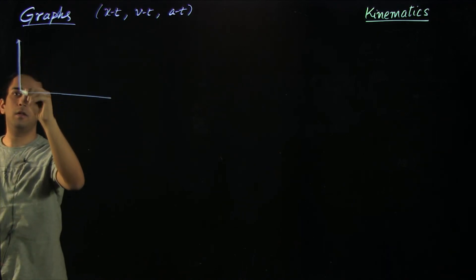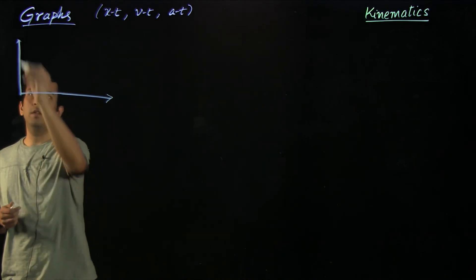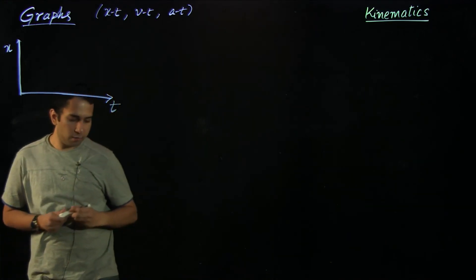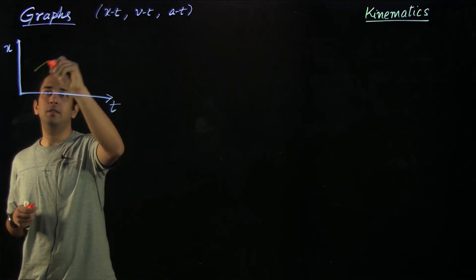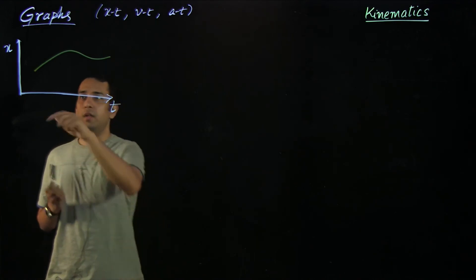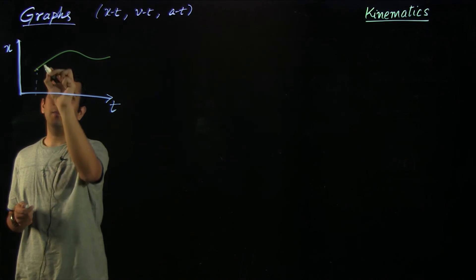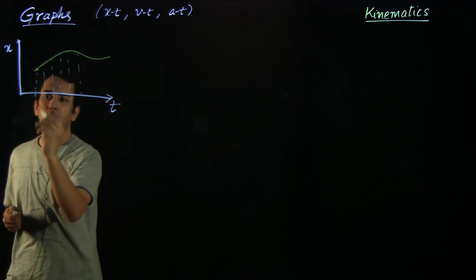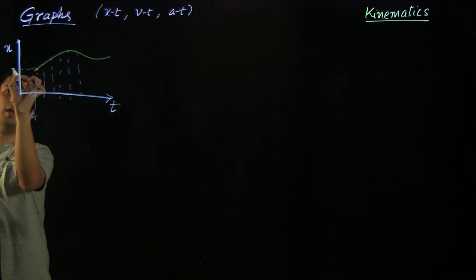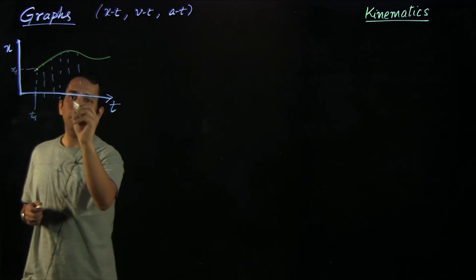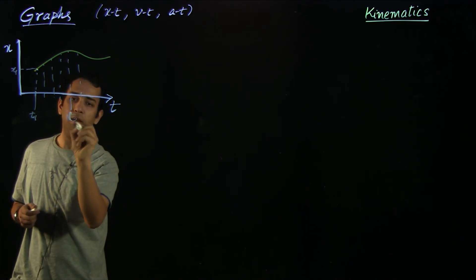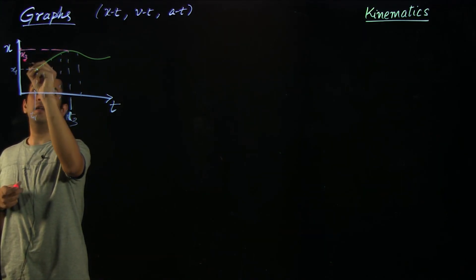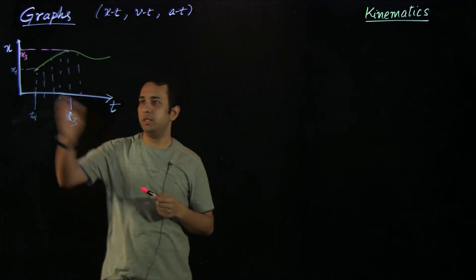By xt graph, we mean that on the vertical axis, x is given and on the horizontal axis, time is given. And if you are plotting a curve like this, that means I am plotting the different points at which my particle was present with respect to the time associated with that position. So at time t1, my position was x1, and at time t3, my associated position was x3. Similarly, I can find out different positions with respect to different times.